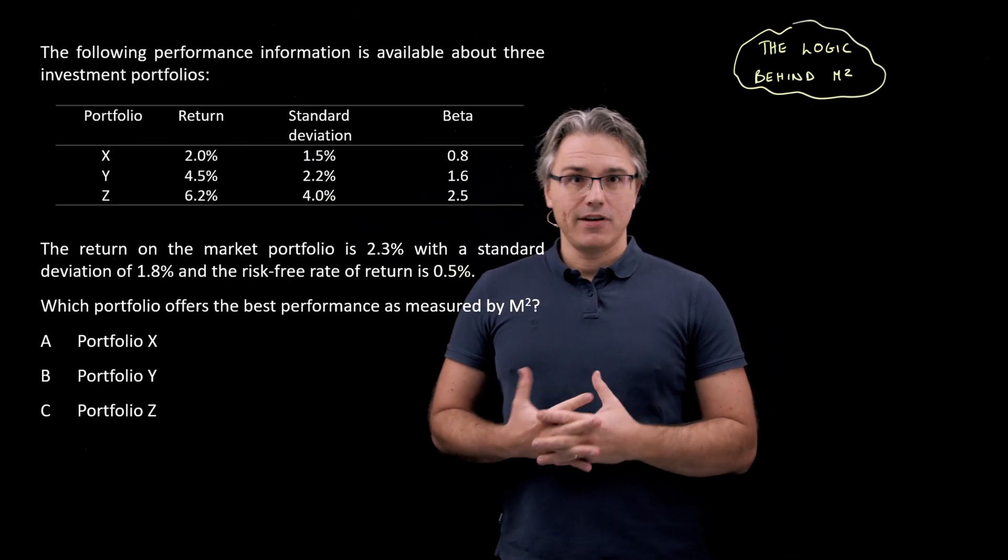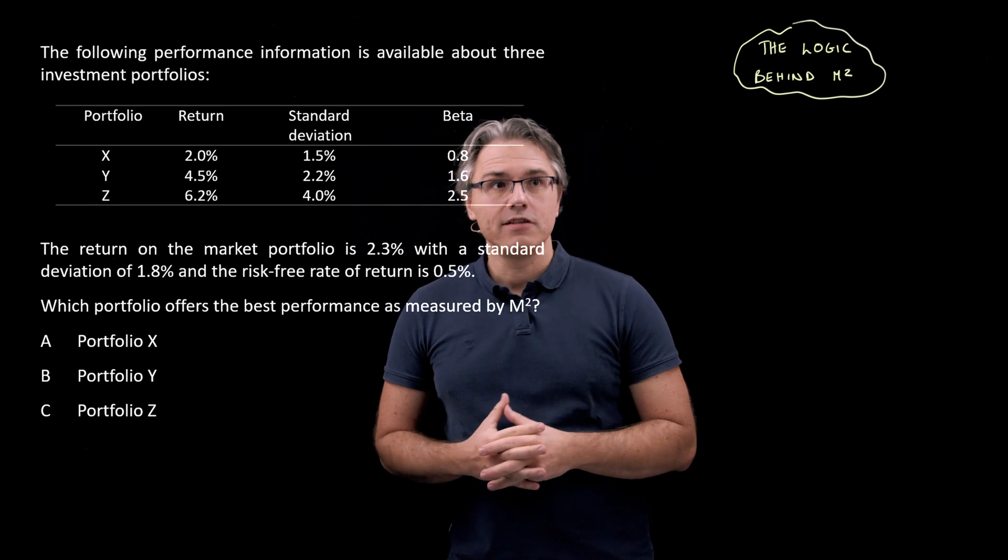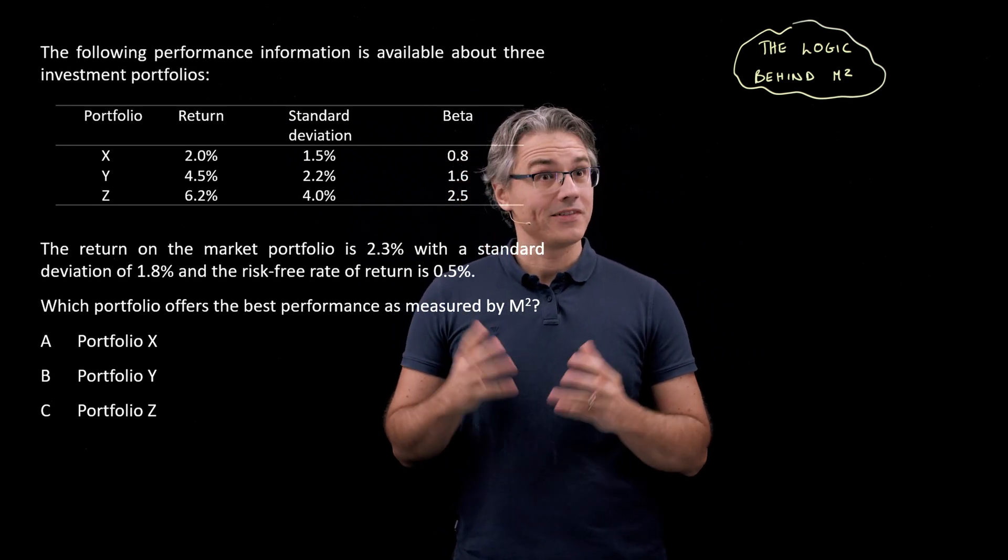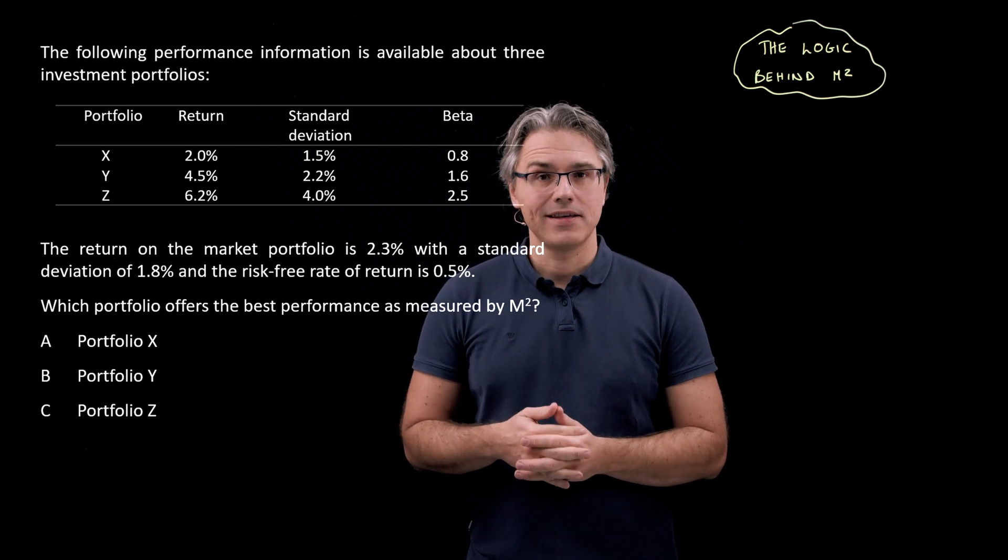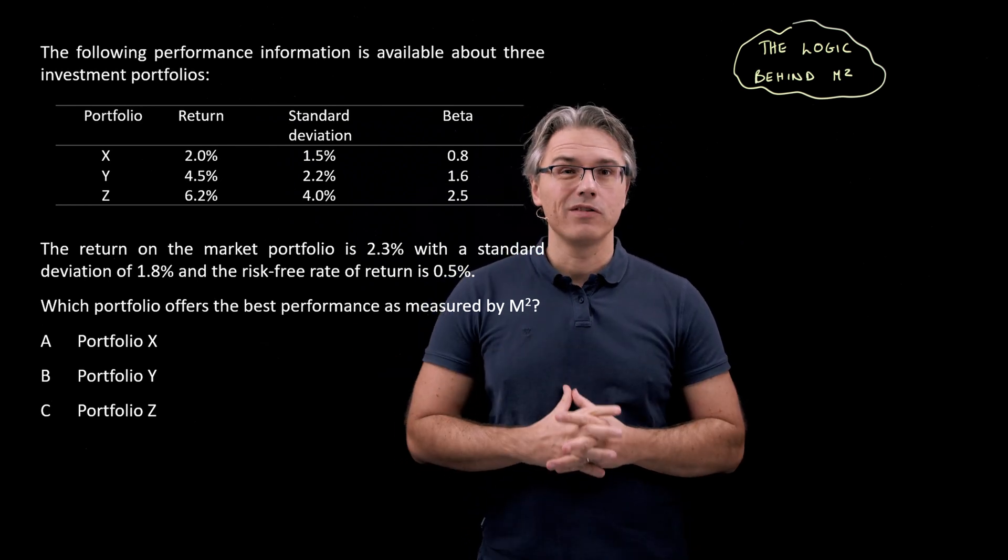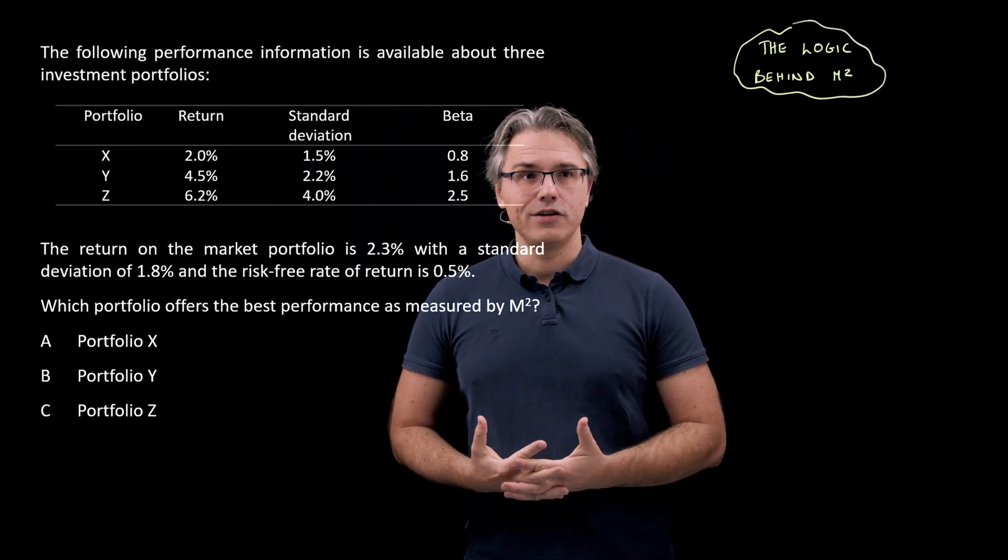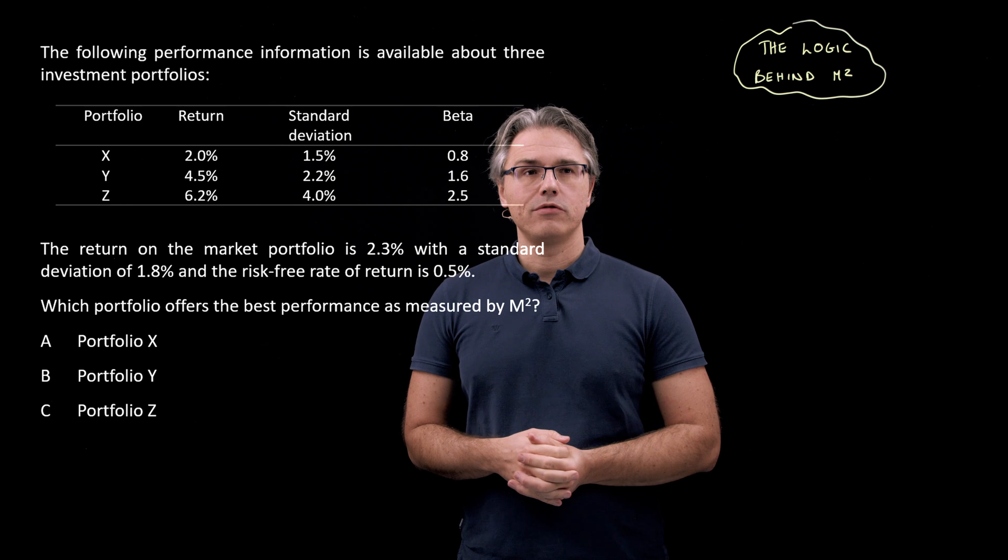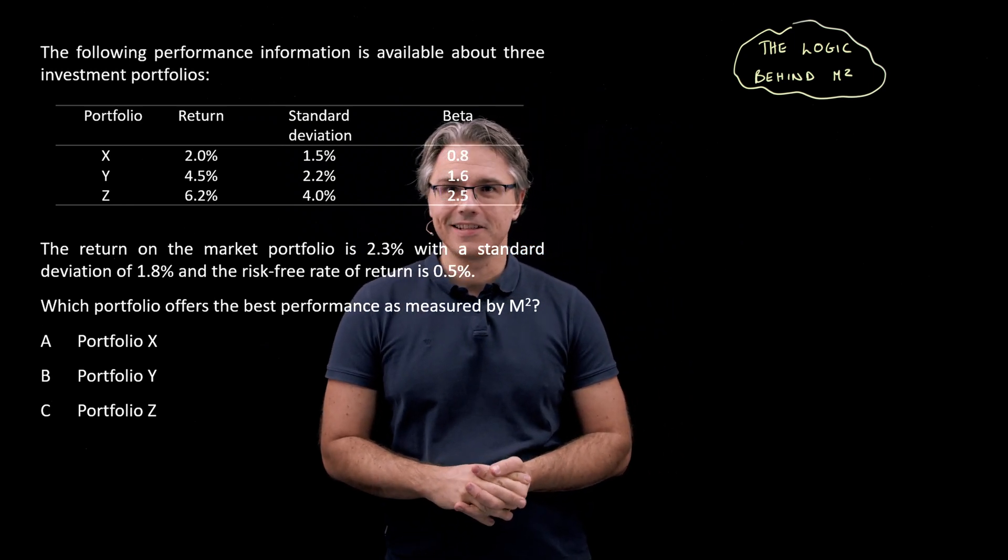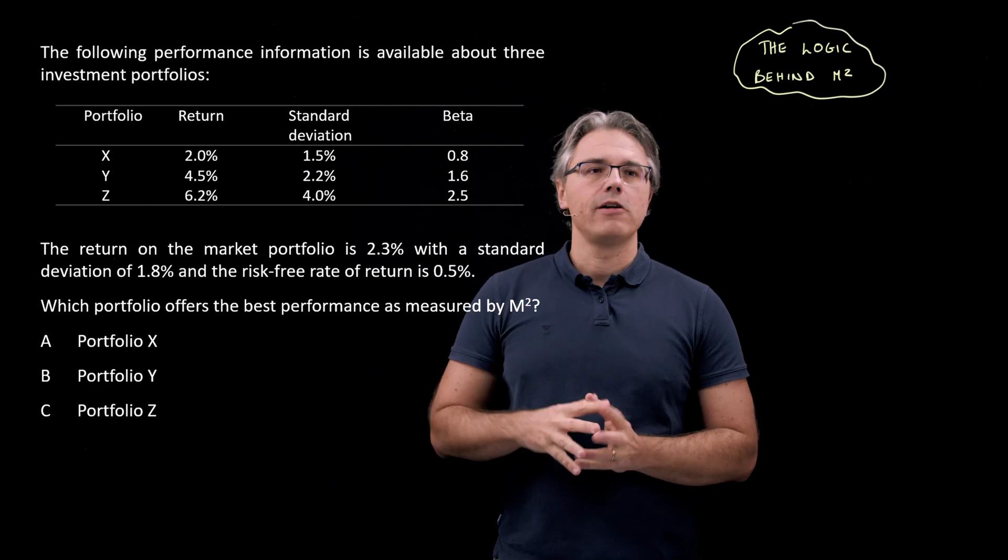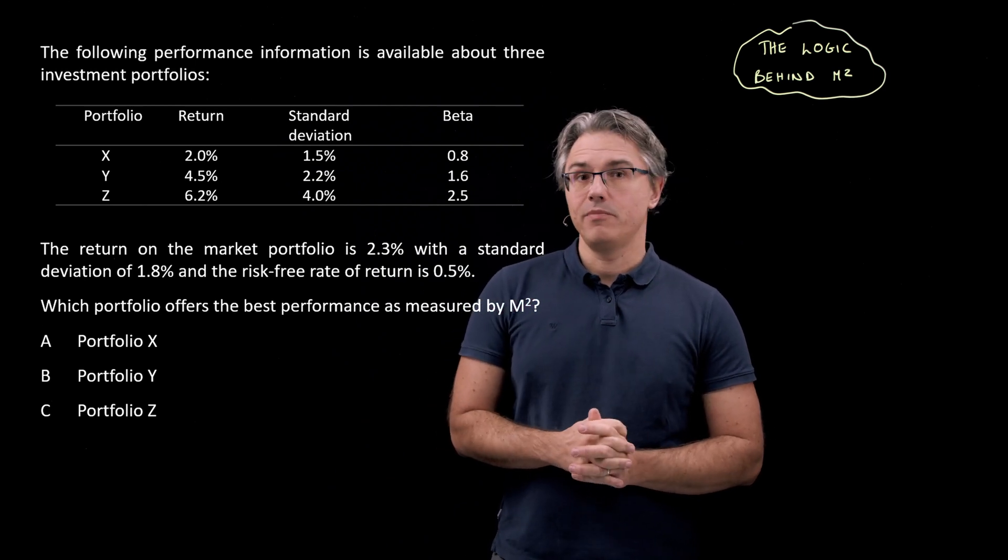This is the question which I want us to have a go at. The following performance information is available about three investment portfolios: portfolios X, Y and Z, which we had in the previous video on the Treynor ratio. The return on the market portfolio is given, the standard deviation is given for that market portfolio, and the risk-free rate is given at 0.5%. Which portfolio offers the best performance as measured by M-squared?